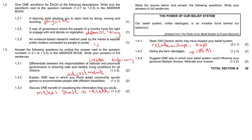Question 1.4.3: suggest one way in which your belief system could influence your personal lifestyle choices and motivate your answer. Your beliefs about the type of lifestyle you want to live in the future may affect the goals you set or the career choices you make in life — it affects your goal setting.